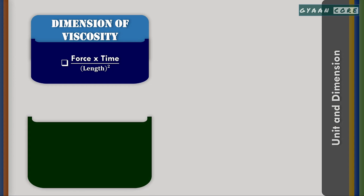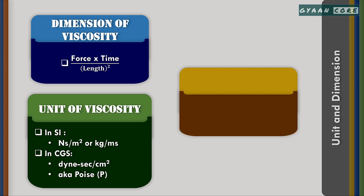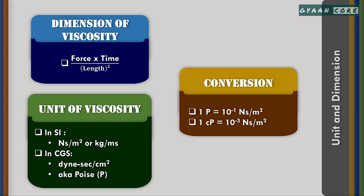Finally, it comes to mass divided by length times time. Hence, the dimension of viscosity can either be written as force times time divided by length squared, or mass divided by length times time. The unit of viscosity in SI will be Newton-second per meter squared, or kg per meter-second. In CGS, it will be dyne-second per centimeter squared, which is also known as poise. The conversion formula is: 1 poise equals 10 to the power minus 1 Newton-second per meter squared, and 1 centipoise equals 10 to the power minus 3 Newton-second per meter squared.